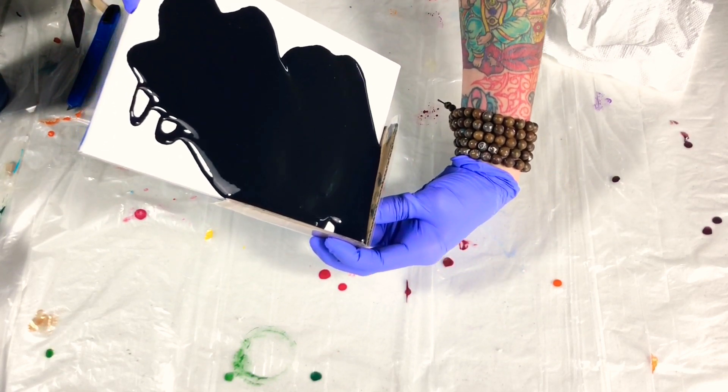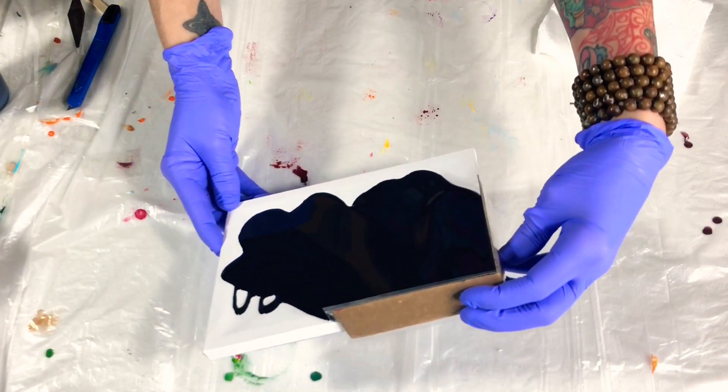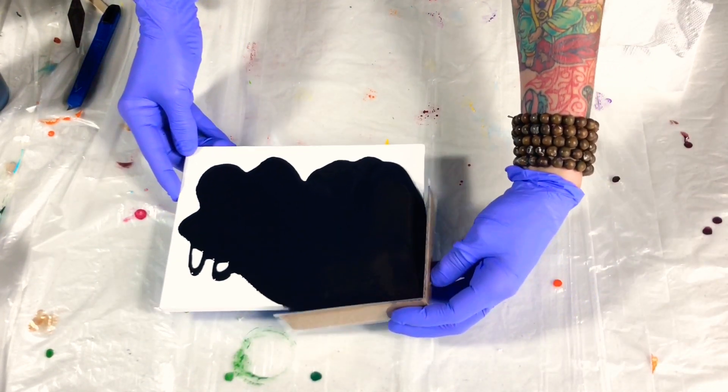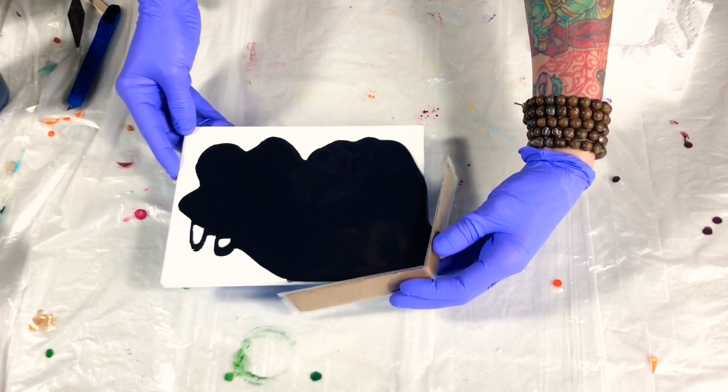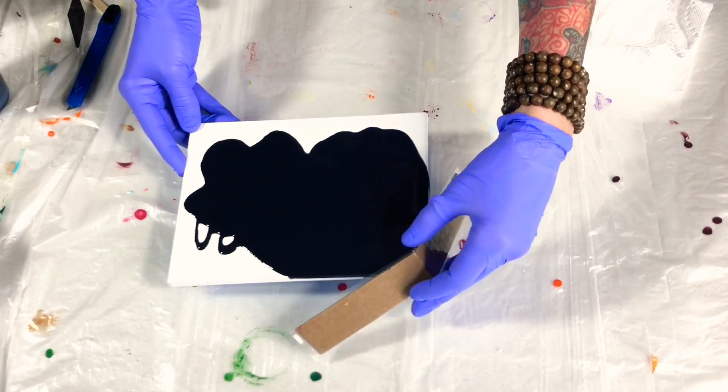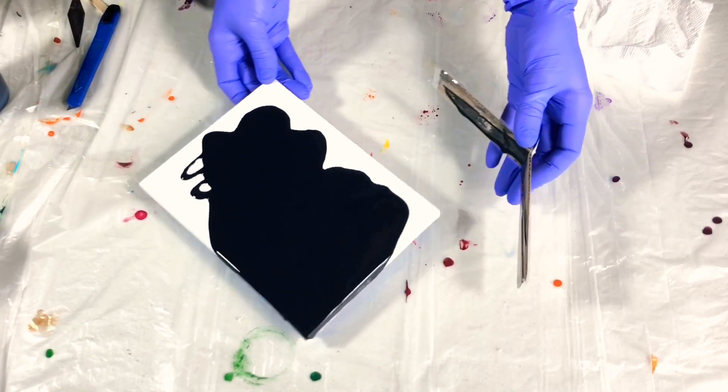So I wrap it around the side and what I do is I let the paint run, and what happens is the cardboard catches the paint and it doesn't spill over.